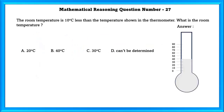Question No. 27: The room temperature is 10 degrees less than the temperature shown in the thermometer. What is the room temperature? The thermometer shows 40 degrees, and 40 − 10 = 30. So our answer is C, 30 degrees.